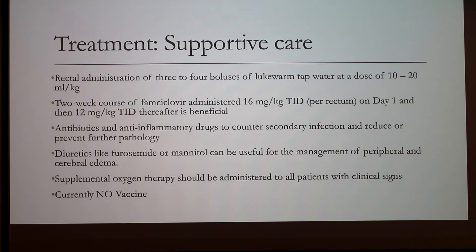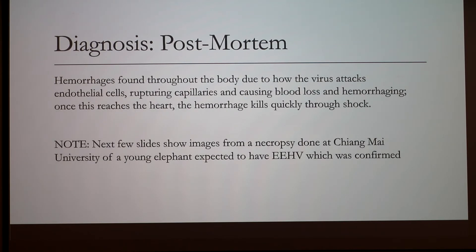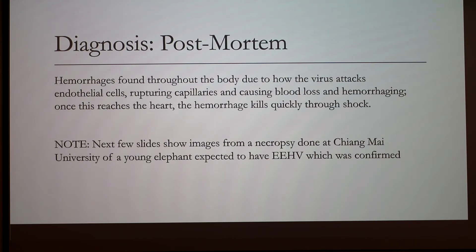This is a fairly new disease — the first case was discovered in a zoo in 1995 — and there is currently no vaccine. For post-mortem diagnosis, which is the most common way to find out what happened, hemorrhages are found throughout the body due to how the virus attacks the endothelial cells, rupturing capillaries and causing general blood loss. Once hemorrhage reaches the heart, death occurs quickly through shock. The following slides show necropsy images from Chiang Mai University in Thailand of a young elephant confirmed to have EEHV.